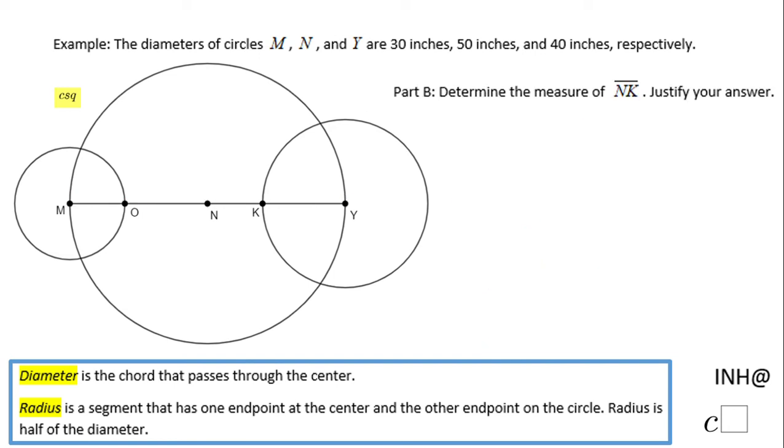Part B is similar. We need to find the measure of NK, which if you notice is this segment right here. I'm going to write a similar relation: NK, the segment we need to find out, plus KY equals NY. This is, like I said before, the ruler postulate.